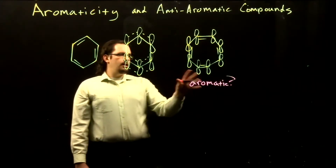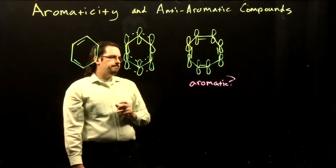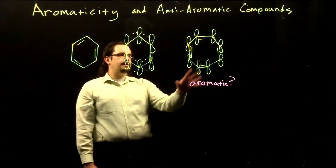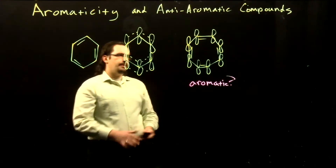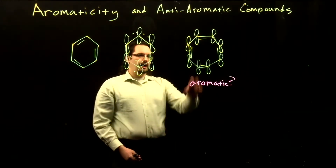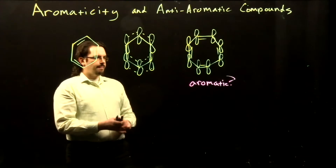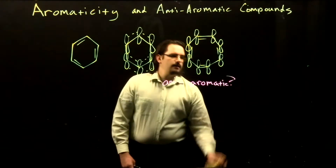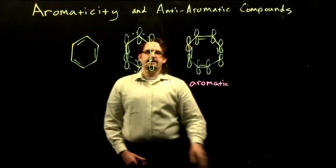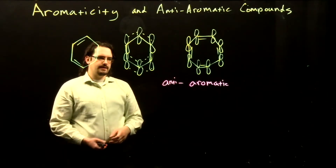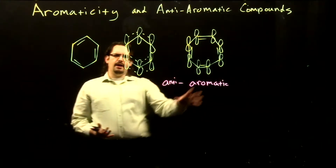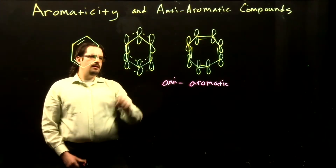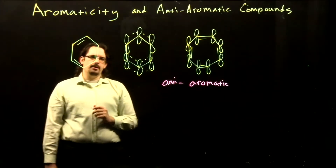However, if we actually synthesize cyclooctatetraene, what we would find is that it actually is not aromatic and in fact is surprisingly unstable. So despite having the same alternating double bonds and pi bonding system that we see with benzene, it actually is anti-aromatic. It doesn't have the normal resonance stabilization that we see with benzene. So what makes cyclooctatetraene different from benzene? We again have the same alternating double bonds, the same p orbitals — why is it different?